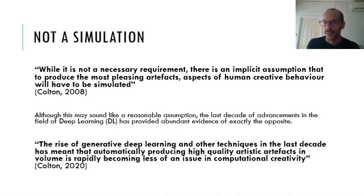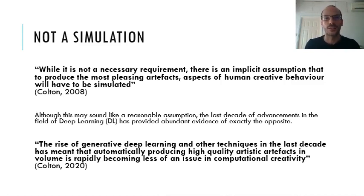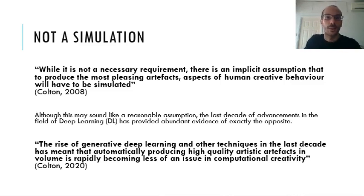Another fundamental assumption in computational creativity, at least up until a decade ago, was that part of the human creative process would need to be simulated. The last decade of achievements in deep learning, and generative deep learning in particular, has shown that perhaps this simulation is not needed, or we can get results even without trying to simulate humans, because neural networks aren't really a simulation of the human brain.